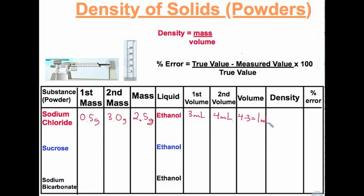Density is mass divided by volume. So we plug in 2.5 grams over 1 milliliter, and that equals 2.5 grams per milliliter.